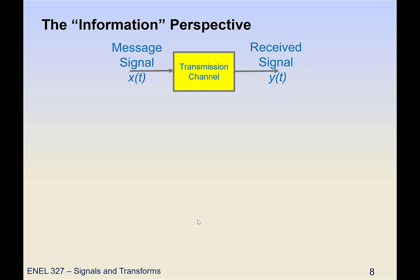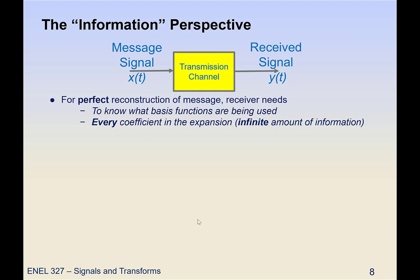If we have chosen to decompose our input signal, with either impulses or polynomials or whatever basis functions we want to use, then the receiver can perfectly reconstruct that signal if they know, first off, what basis functions are being used. So we have to be on the same page. And then if I send them every coefficient in the expansion, then the receiver can perfectly reconstruct that signal x(t).